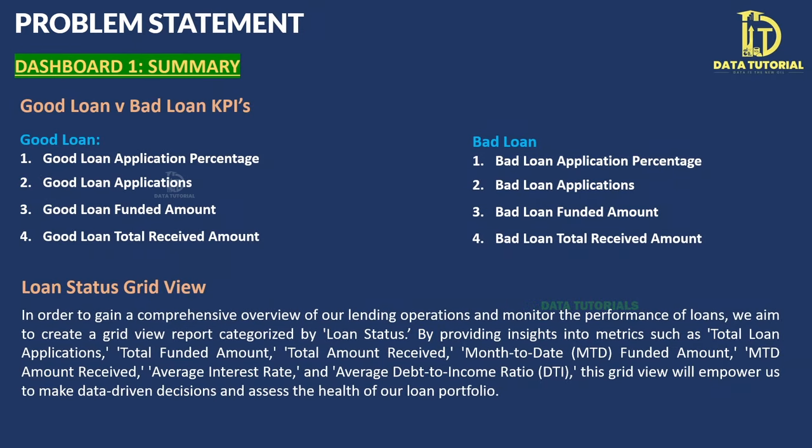The second section of the Summary dashboard analyzes Good Loans versus Bad Loans. Good loans are those where borrowers are repaying installments on time or have fully paid — including current (ongoing) accounts. Bad loans are where borrowers have not paid installments. We need to find total good and bad loan counts, application percentages, funded amounts, and amounts received.